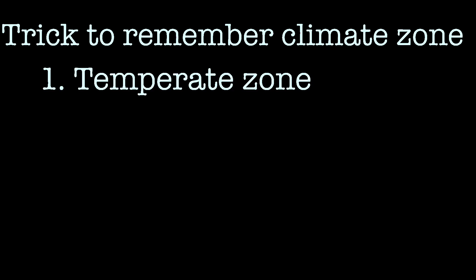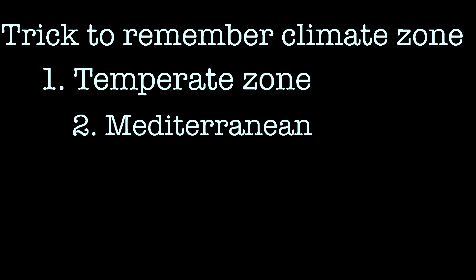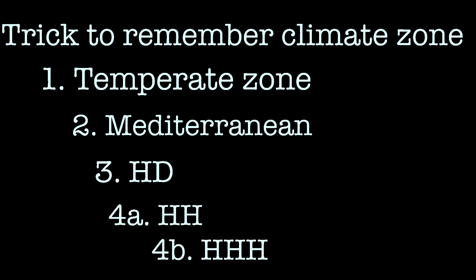Now I will tell you a shortcut to remember all these stability climatic zones. You have to remember only the first zone, that is the temperate zone. Zone 1 is called the temperate zone, and when you say 'temperate,' take the initial three letters: TEM. From T you remember temperate, and from M you can remember Mediterranean zone, which is zone 2. For zone 3 you can call it the HD zone, for zone 4A you can call it double H, and for zone 4B you can call it triple H.